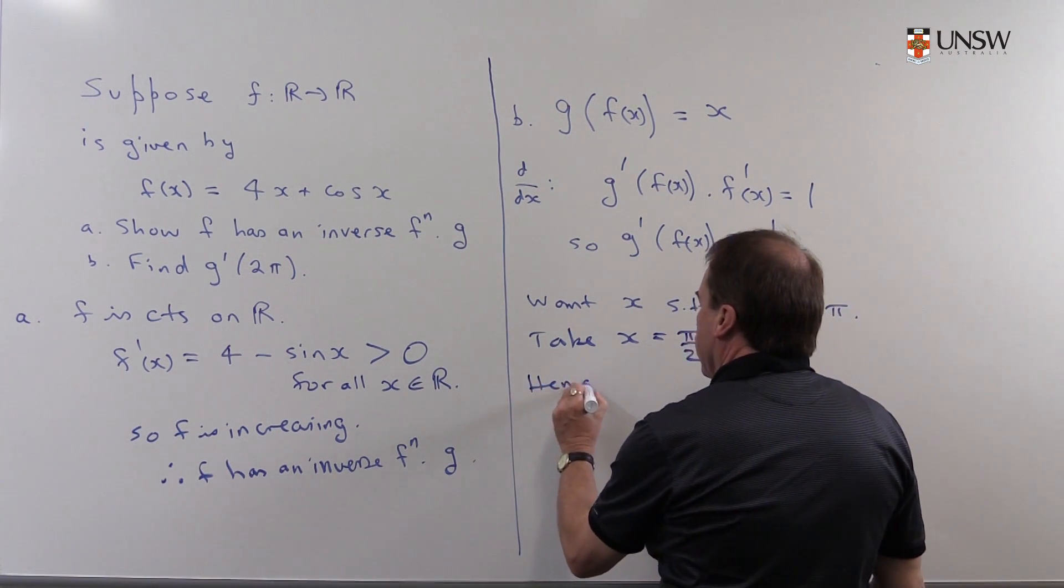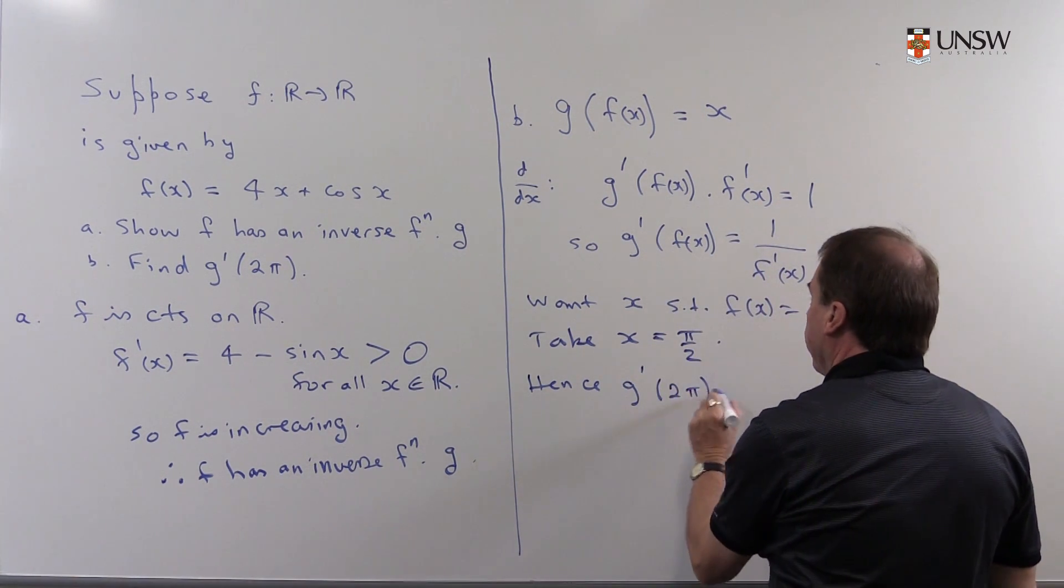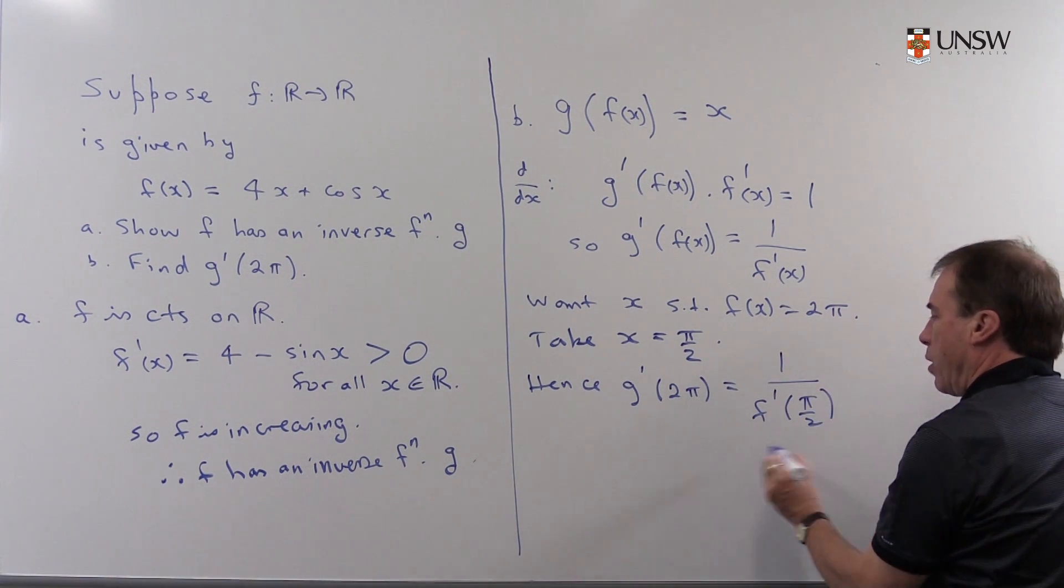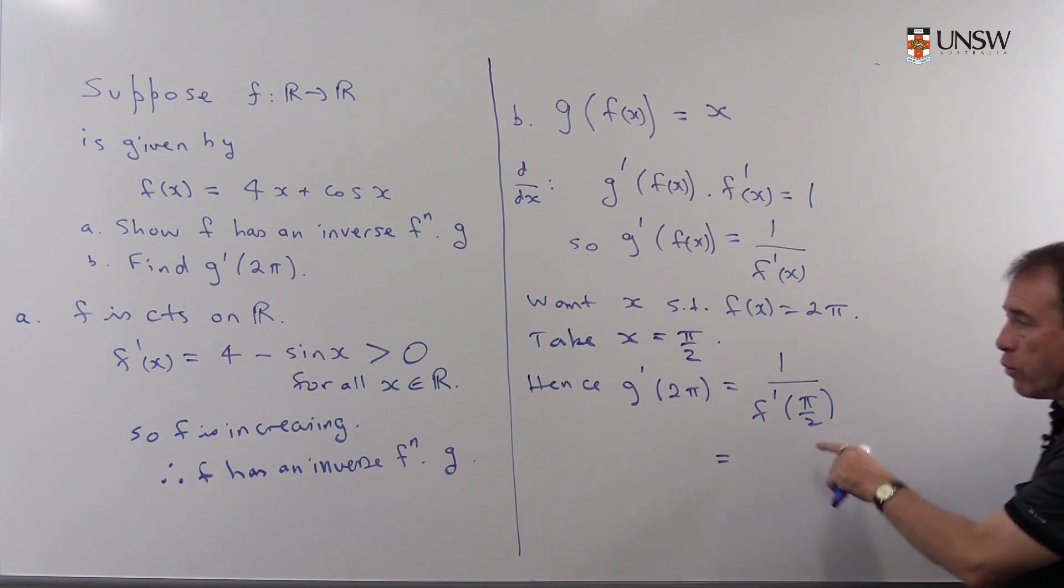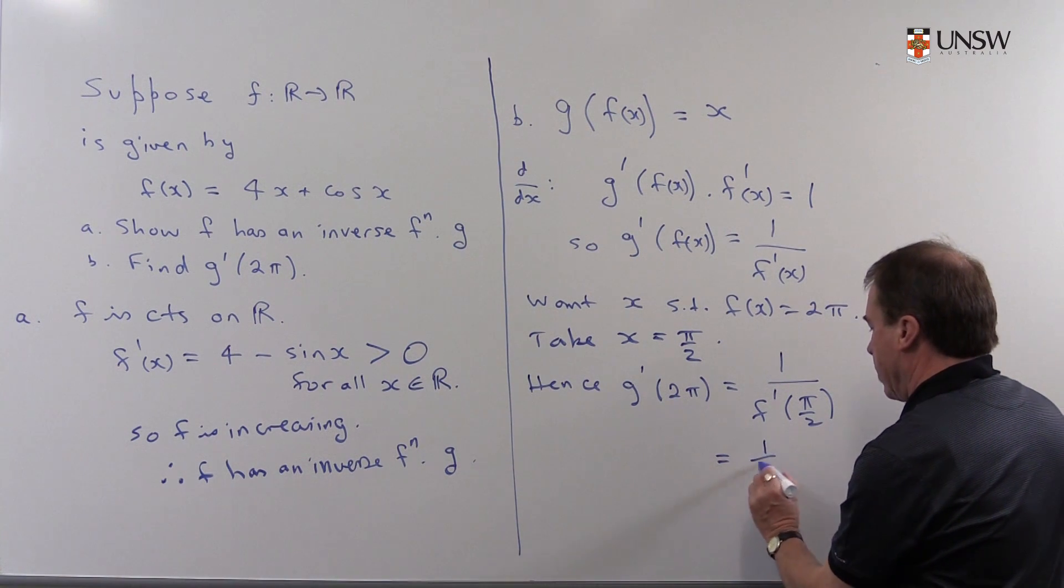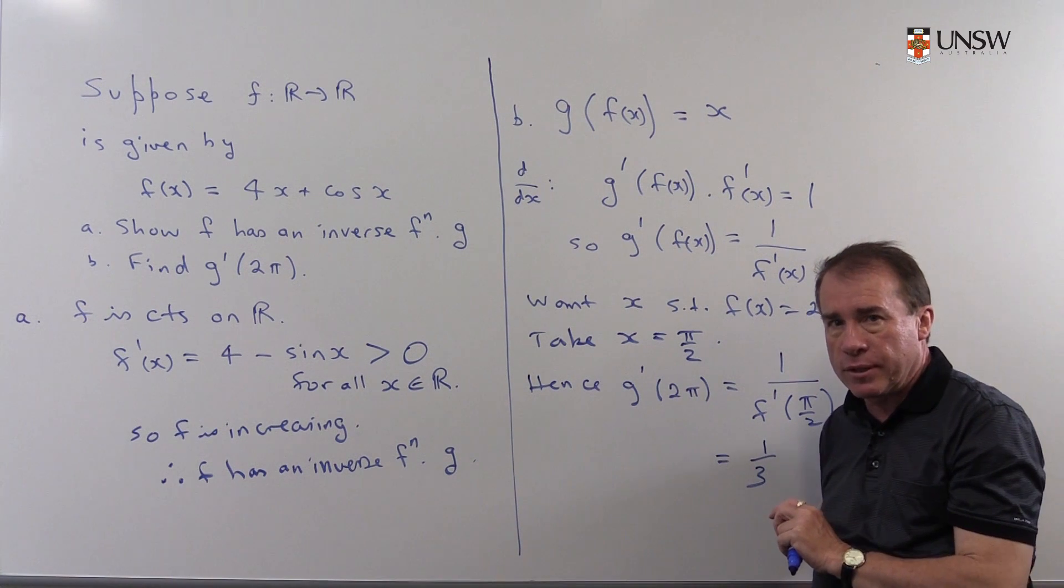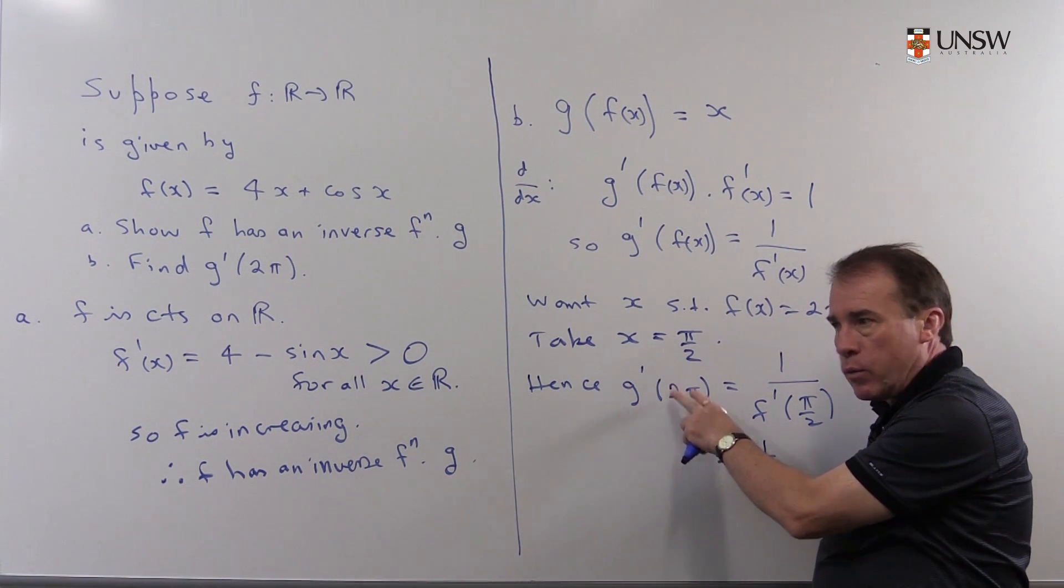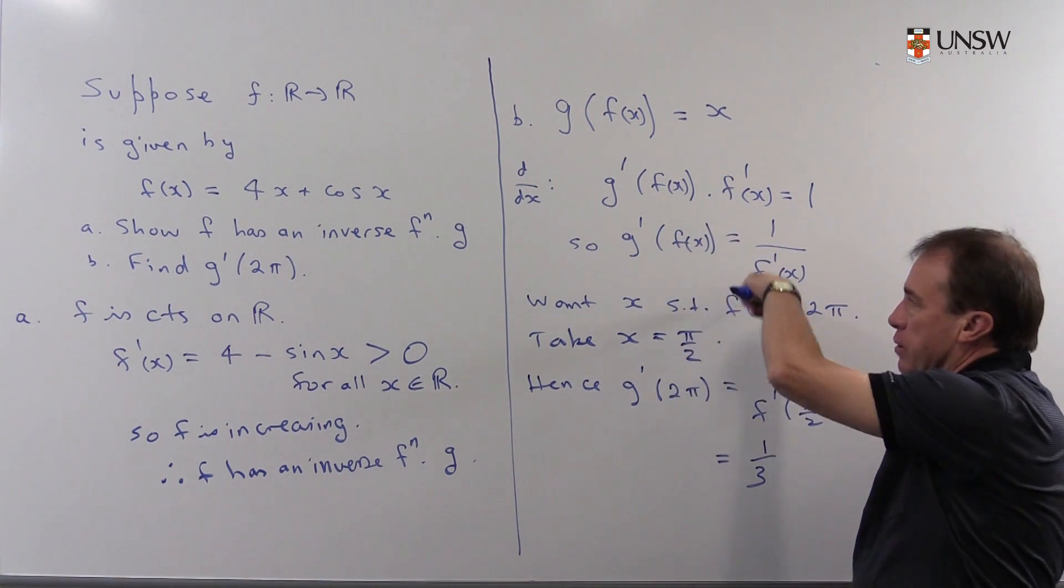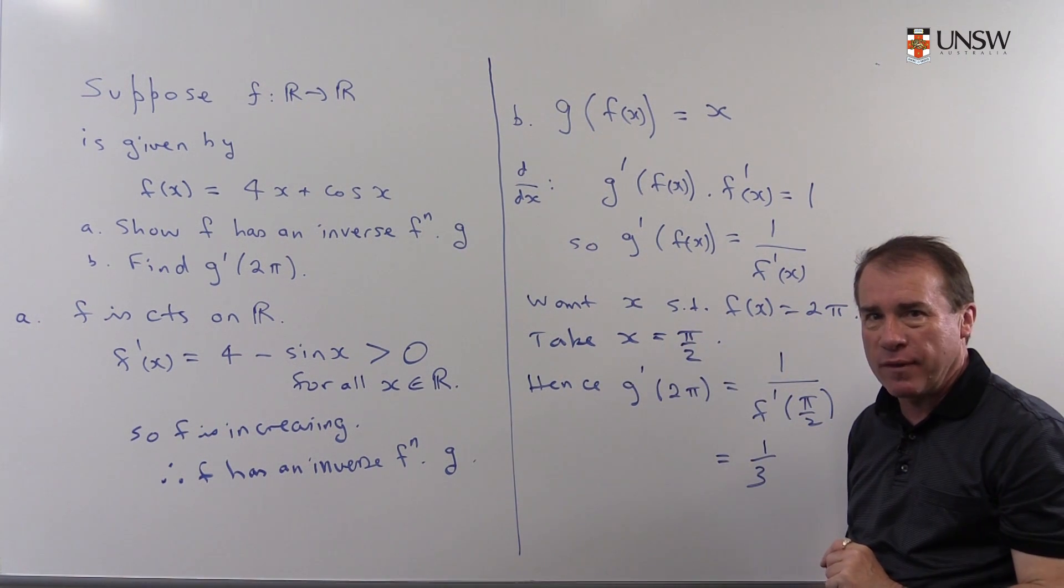So finally then, I can say that the derivative of, I now want to replace this with 2π, and that's going to be 1 over f'(x), the x value is π/2. I've already worked out f' over here, so I just plug π/2 in, and I get 3. So I get 1/3. So notice we worked out the derivative of the inverse at a particular point without actually calculating what the inverse function was, using our inverse function theorem and formula and using just a little bit of common sense to work out what the x value was.